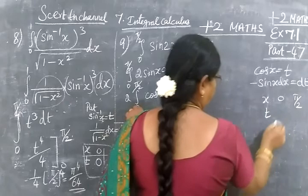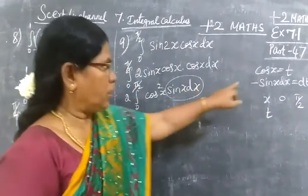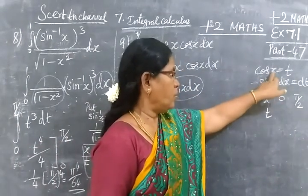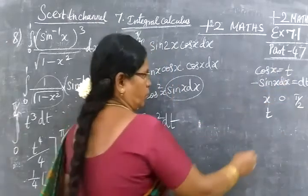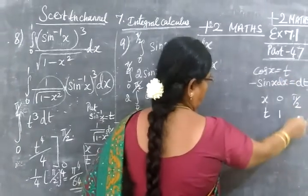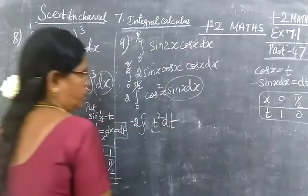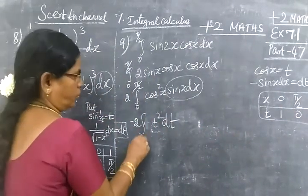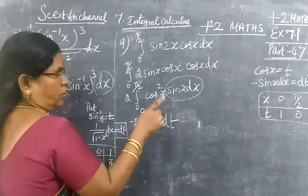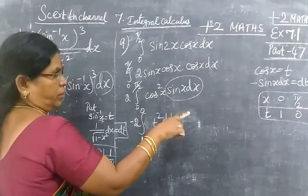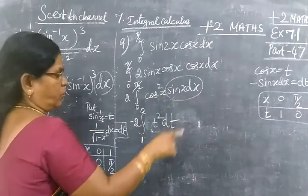We change the limit. X is 0 to π/2. For t, cos(0) equals 1, cos(π/2) equals 0. So the limit changes to 1 to 0.